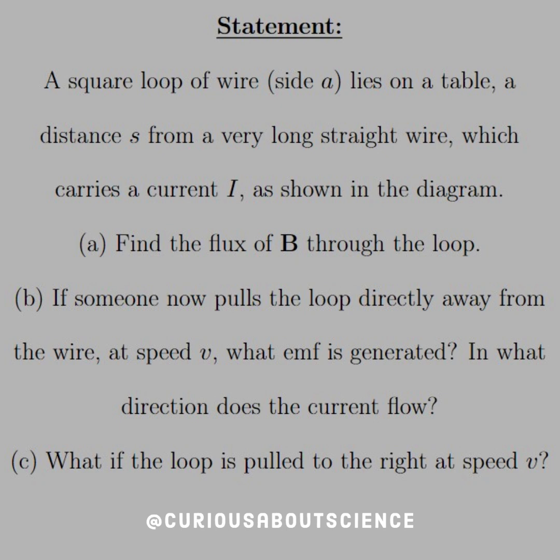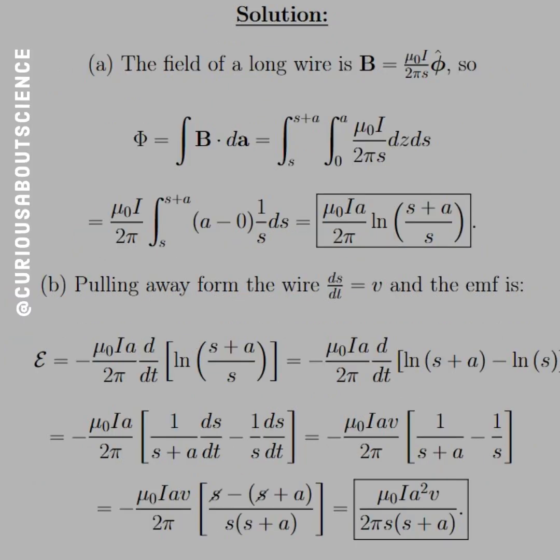B, if someone now pulls the loop directly away from the wire at speed V, what EMF is generated? In what direction does the current flow? That's going to be fun. And C, what if the loop is pulled to the right at speed V? Alright, so we're going to have some conceptual ending points, but let's get through the math.